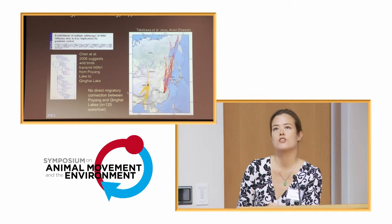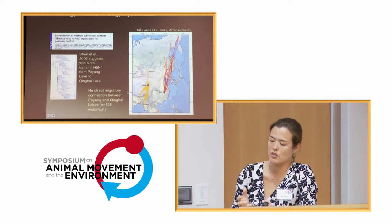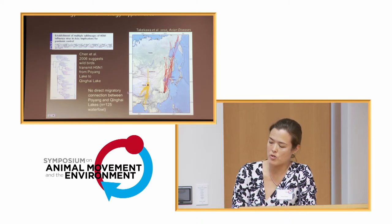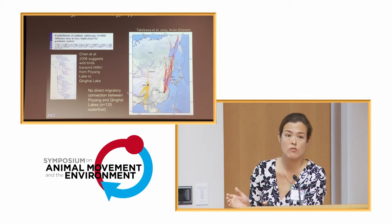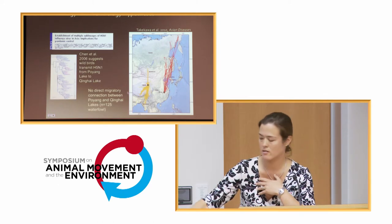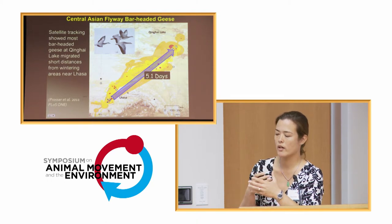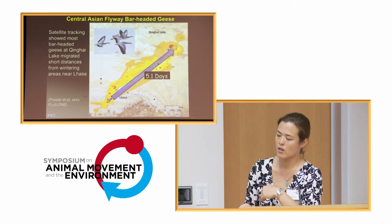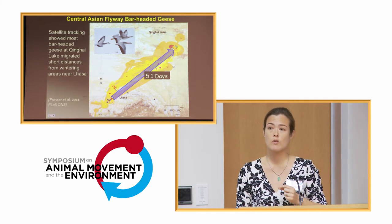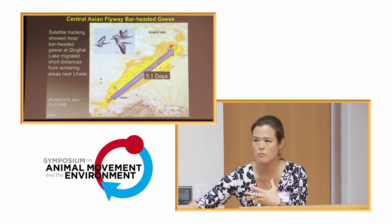Going back to some of the information we learned from the raw data itself: some of the early studies that tried to help us understand virus movement within the region were based on genetics of virology. A 2006 Chen paper hypothesized that wild birds may have moved virus from Poyang Lake to Qinghai Lake. We were able to show from our tracking data that this is probably not the case. Also, understanding how quickly birds may migrate from one region to the next: some birds made it from Lhasa to Qinghai Lake within five days - the amount of time a bird may be asymptomatic - so they may be infected with virus but not showing symptoms yet, potentially able to complete a migration.